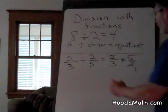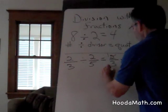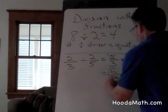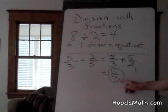and you end up with your result, which is 5 thirds. That is your quotient.